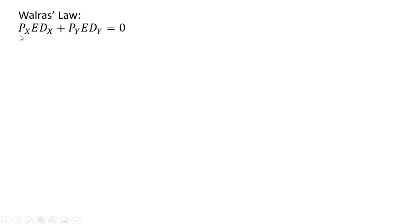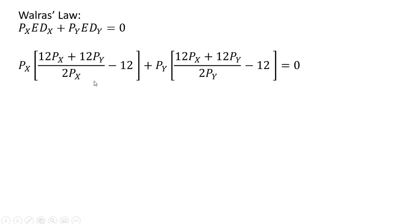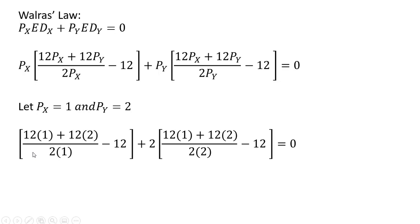So let's look at Walras' Law. It states that the value of the excess demand for good X plus the value of the excess demand for good Y will equal zero. Making our substitutions into that equation, let's pick any set of prices — let the price of good X equal one and the price of good Y equal two. Making those substitutions and simplifying: the excess demand for good X is six, so the value is six dollars. The excess demand for good Y is minus three, meaning there is a surplus in the market for good Y. Multiplying the price of good Y, two, by that surplus gives a sum of zero, which is what Walras' Law predicts.